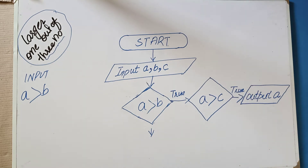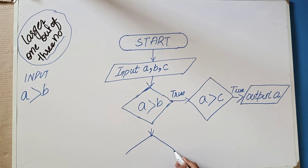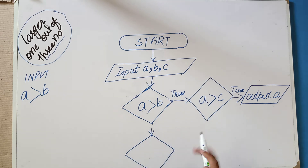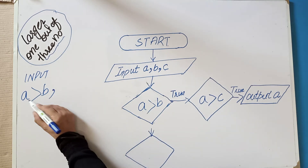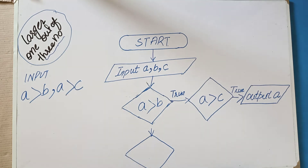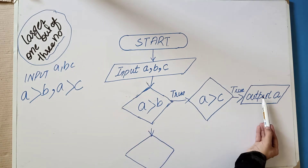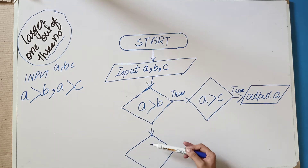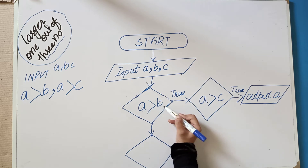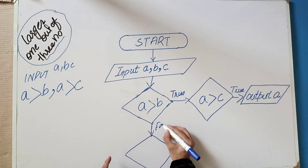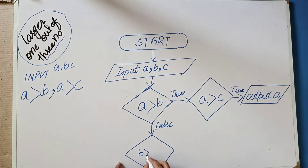If we come to the false condition from A > C — meaning A is not greater than C — we apply another condition. If A is greater than B is false, then B is greater than A. So we go down to the false path. In the false condition, B is greater than A. Now we check: is B greater than C?